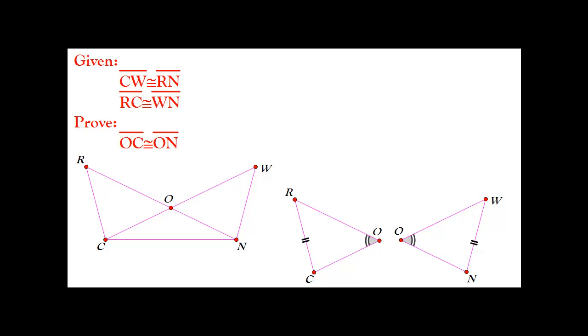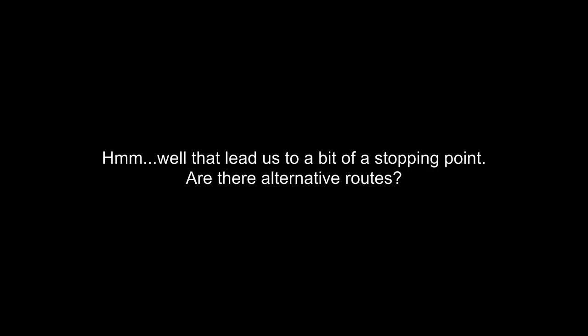From our given information, we know that RN and WC are congruent. However, those two segments are not actually part of these two triangles, so they can't be used in our proof here. So therefore, I think we need to take another route.